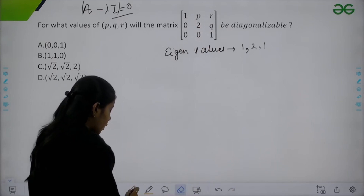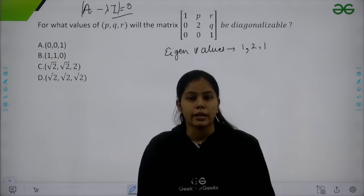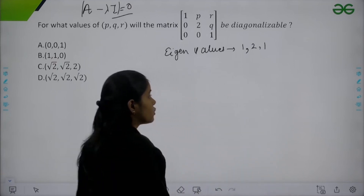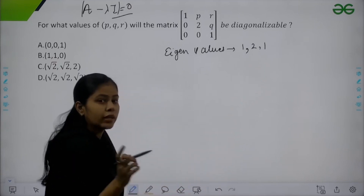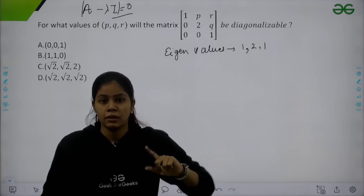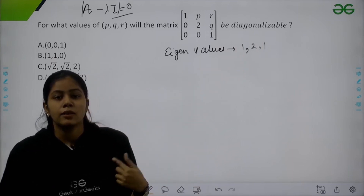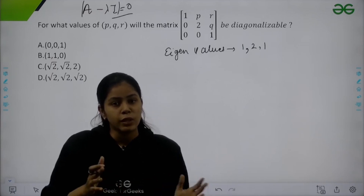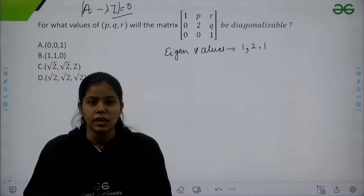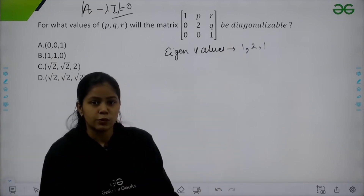Now we look for eigenvectors. We know that eigenvectors corresponding to distinct eigenvalues are independent. Because 1 and 2 are distinct, we get 2 independent vectors from those. However, since 1 is a repeated eigenvalue, we need to check whether we can find 2 independent eigenvectors corresponding to eigenvalue 1.